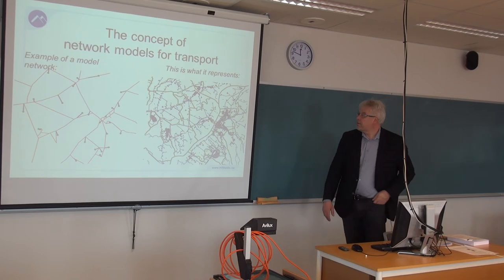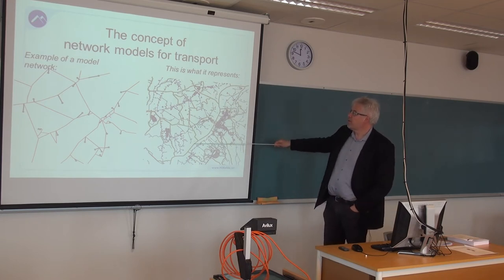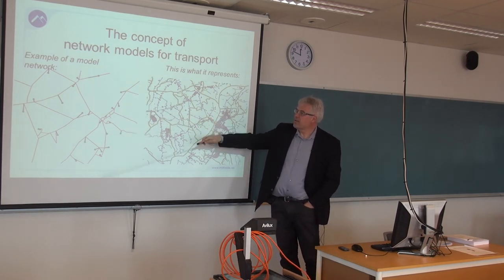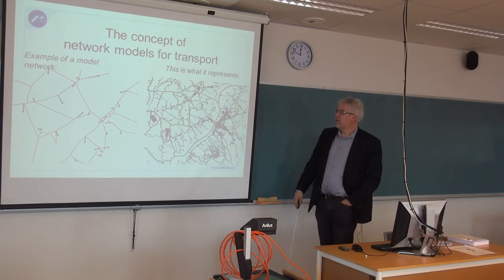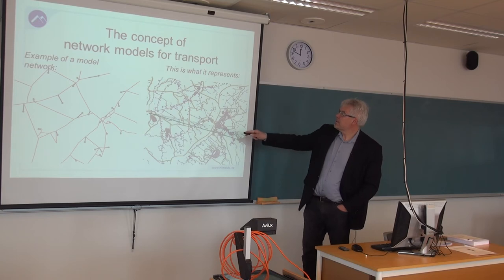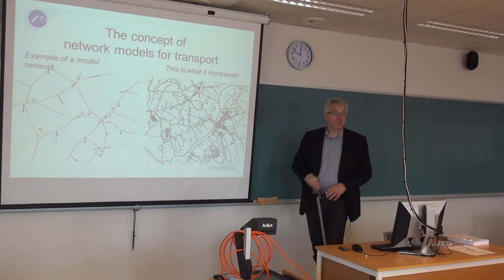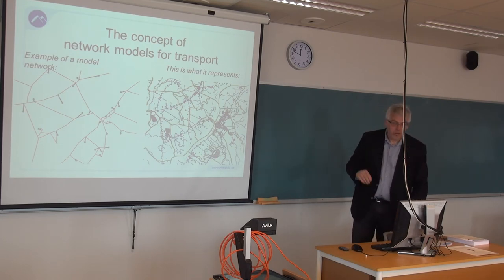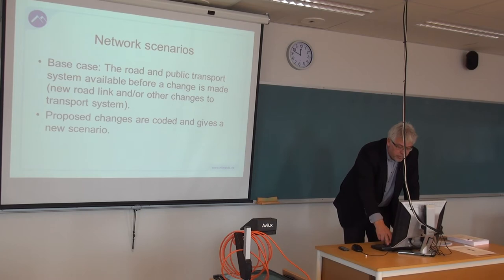This is how it looks: a map showing the road network, and then we have a more stylized design which is represented in the model with driving speeds, distances and everything. This road here is represented by this link. It's a model, so it's not exactly like what we see in the map, but the main roads are there. The base case is where we replicate the flows, and then come the alternatives.